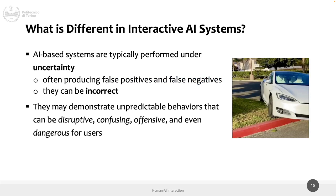In a normal, non-AI-based computer system, given an input you get an output, and if you repeat the operation you get the same output — there is no uncertainty. But if you put some AI, some model, there could be uncertainty, percentages, precision issues, false positives and false negatives. The results can be incorrect, as we said for Tesla and also for ChatGPT. This is something you don't expect from a calculator — an AI system can give you wrong results.